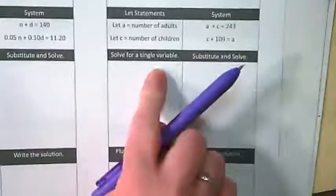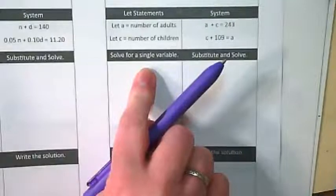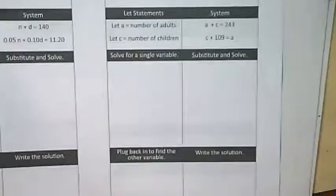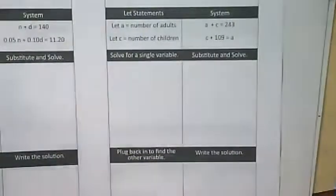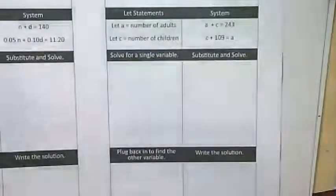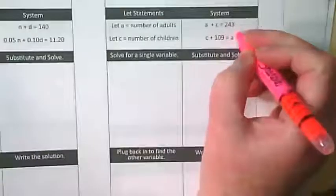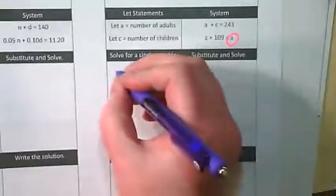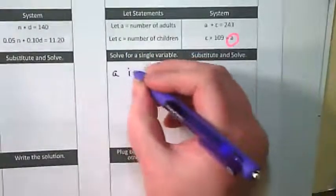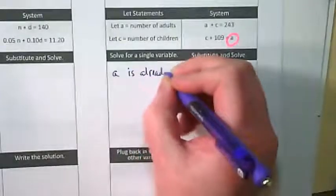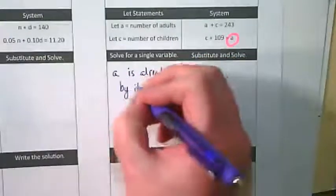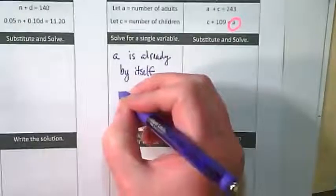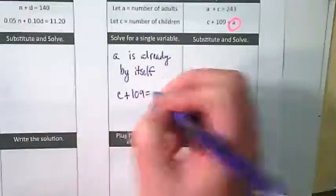So we're going to take those and we're going to solve them, take one of them and solve for a single variable. If you look up here, the A is already by itself. So let's add that to this part of the organizer. A is already by itself. We don't have to do any moving. We have C plus 109 equals A.